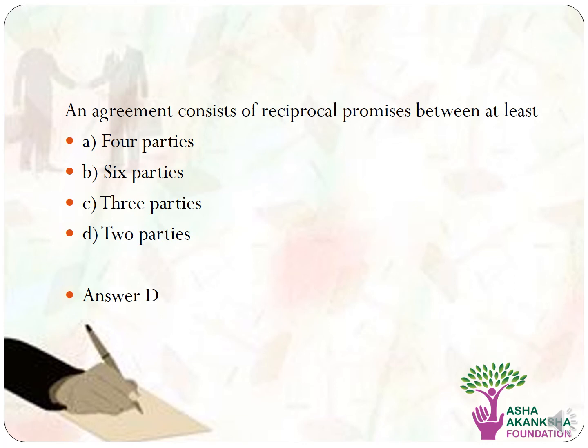An agreement consists of reciprocal promises between at least how many parties? Options are: A) four parties, B) six parties, C) three parties, D) two parties. The correct answer is option D, two parties.